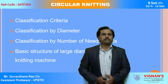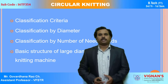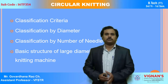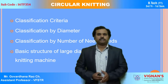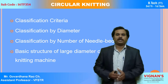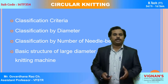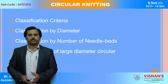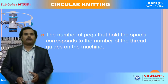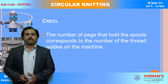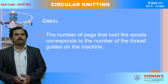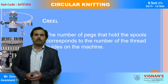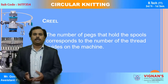In the last sessions, we have seen the classification of circular knitting machines as per the diameter concern and the needle bits used — what are the different types of circular knitting machines and how we can classify them. We have also seen the basic structure of large diameter circular knitting machines. Today's session, we are going to see what exactly the feed system is and how the yarn is feeding to the knitting elements to make the knitted fabric structure.